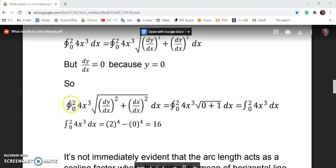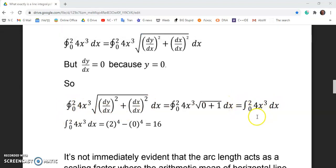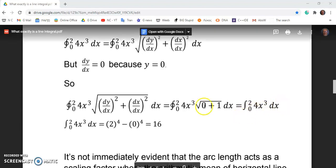So essentially what you end up having is the evaluation of this integral here, which is no longer a contour integral in the sense that we're looking at a product of work and distance. And the evaluation of this integral is 16.